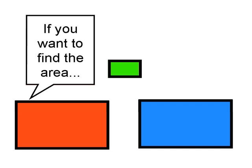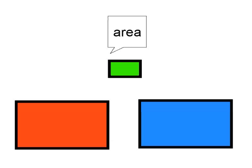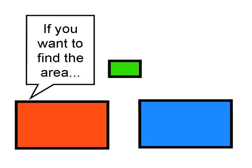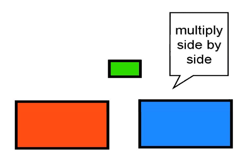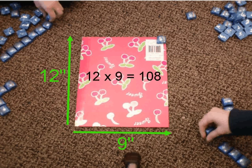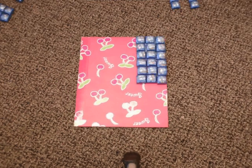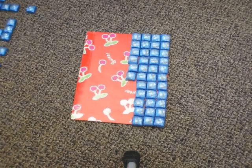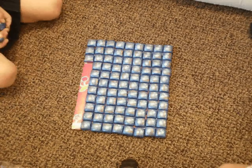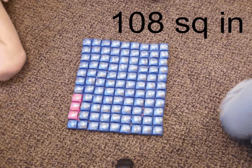If you want to find the area, then you multiply side by side. A rectangle has length and width, you multiply the pair. You're finding all the space inside, and the units in the answer are squared.